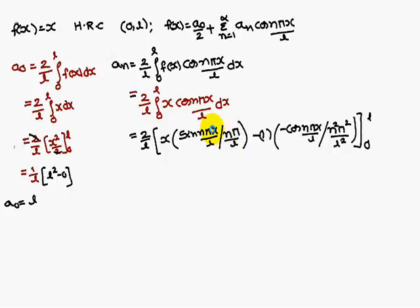Now if you substitute l here, l will get cancelled, sin nπ is 0. First term is 0. Second term minus into minus plus. l will get cancelled, cos nπ. So n square π square by l square means l square you get into the numerator, n square π square is in the denominator.